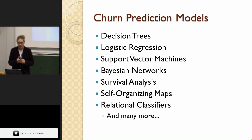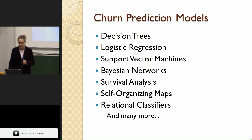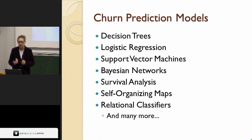Next, we look at churn prediction models — the techniques used to actually make predictions about who your top 5% or top 10% likely to leave are. Almost every modeling technique has been used for churn prediction; it's very well studied. We have examples of decision trees, logistic regression, support vector machines, and many others. Making a decision about which model to use is not always straightforward.